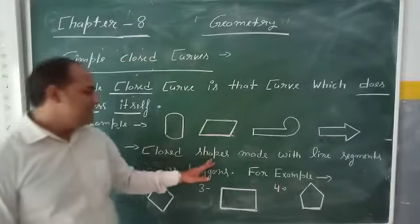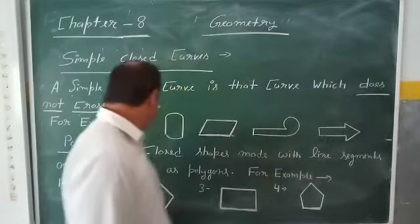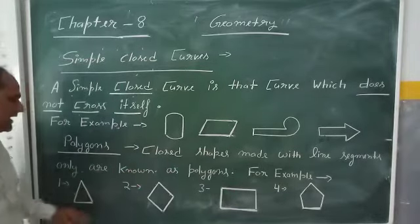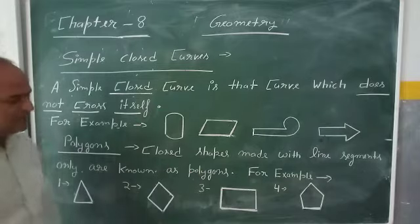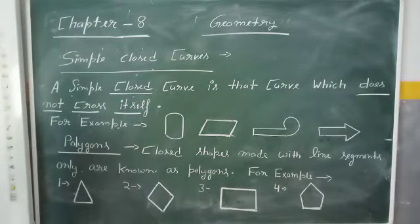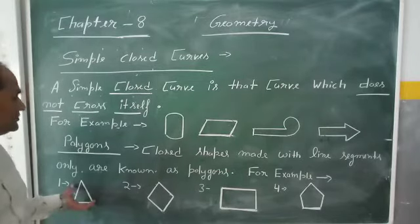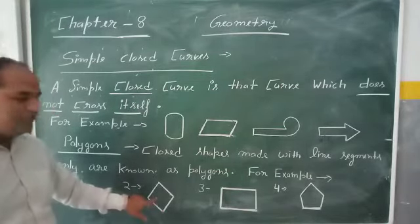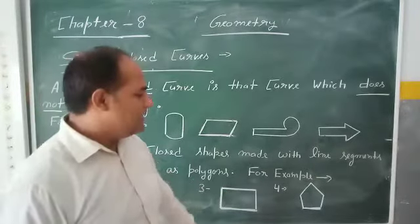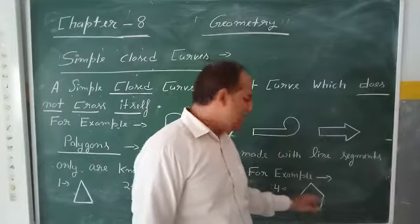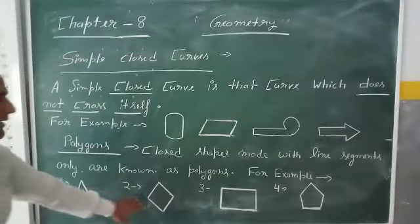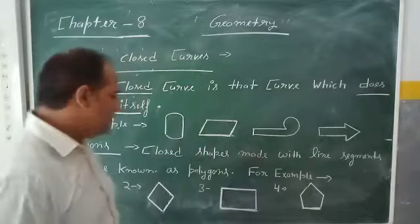Closed shapes made with line segments only are known as polygons. For example: triangle, square, rectangle, and pentagon — these are examples of polygons. These are closed shapes, as you can see in these figures, and they are made with line segments only.